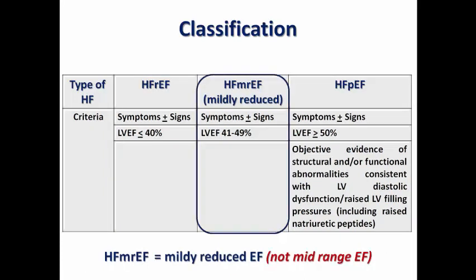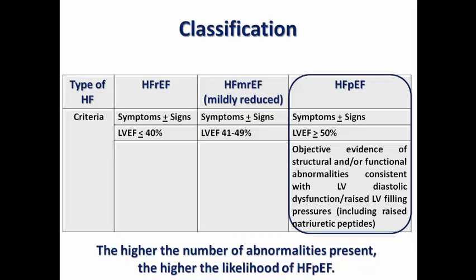Heart failure with mildly reduced ejection fraction has an EF from 41 to 49%. The previous name was mid-range ejection fraction, but now 'MR' stands for mildly reduced. And of course, heart failure with preserved ejection fraction has an EF of more than or equal to 50%, but we need objective evidence of structural or functional abnormalities consistent with diastolic dysfunction and raised LV filling pressure.